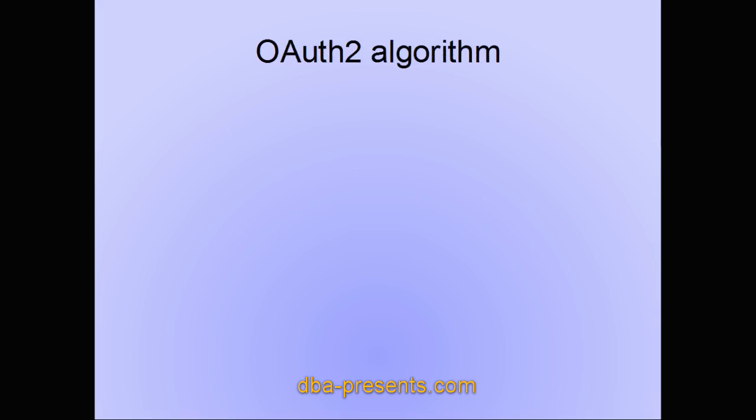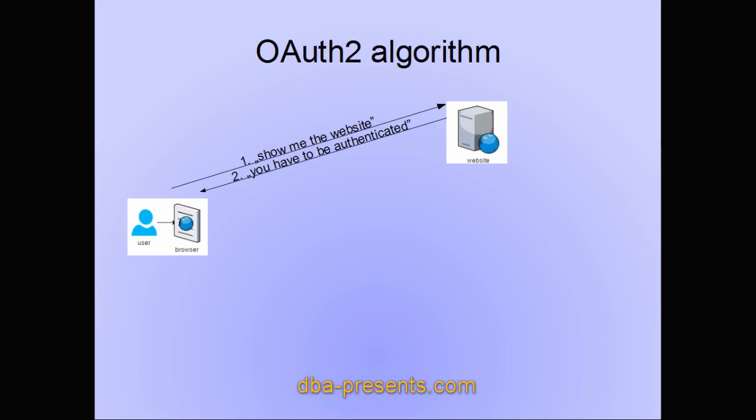I will focus on OAuth 2 as this is the latest and the most popular version of this protocol. I am going to present only one positive scenario supported by OAuth 2 but there are several more. It should be enough to understand the concept. The process starts from a user who is trying to enter a website with his internet browser. It results in sending show me the website request to the relying party. The website needs to know who the user is so it responds with you have to be authenticated. And the user can choose identity provider. He chooses Google which is supported by the website which means that Google sign-in was configured by a web developer.